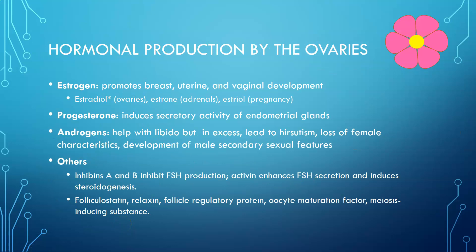Estrogen is produced by the ovaries and promotes breast, uterine, and vaginal development. Estradiol is the primary one produced by the ovaries, but there is also estrone — produced by the adrenals — and estriol, produced during pregnancy. Estradiol is really responsible for the female features and reproductive function. Estrogen is released early in the menstrual cycle and promotes follicular development and eventually the release of the egg.